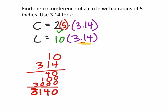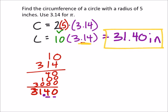I need two decimal places here, which means the circumference is 31.40. You don't need the zero, but if you want to put it there that's fine. The units are inches, and don't forget to label your answer.